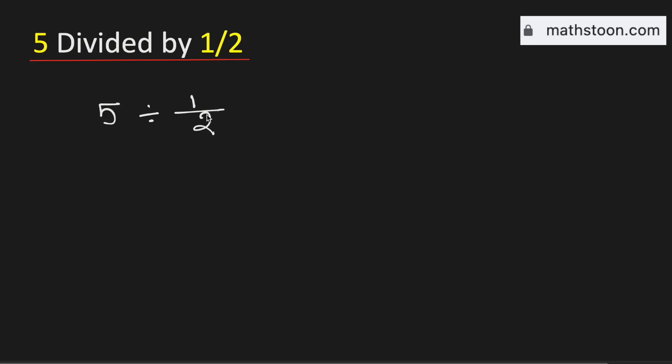To find 5 divided by 1 over 2, we need to first write this division as multiplication.